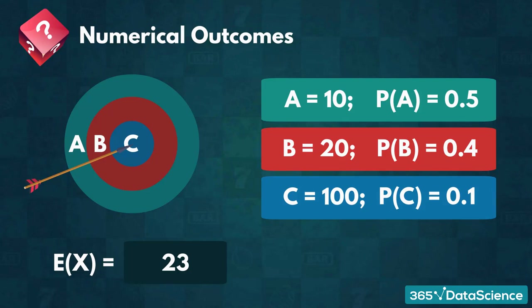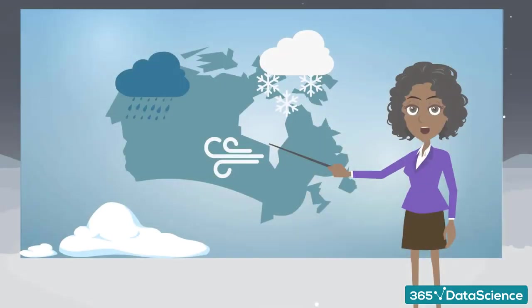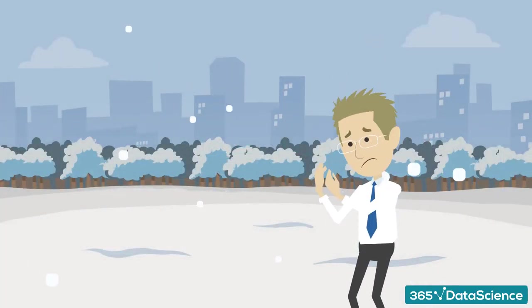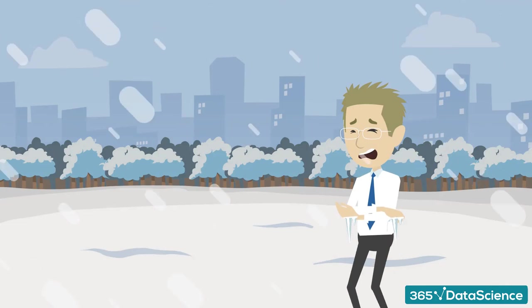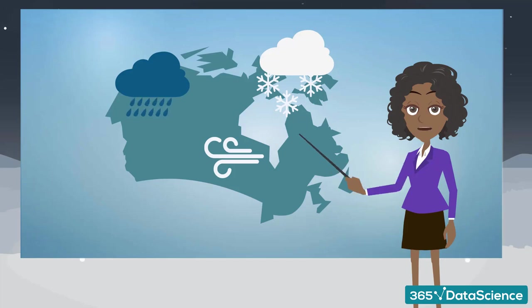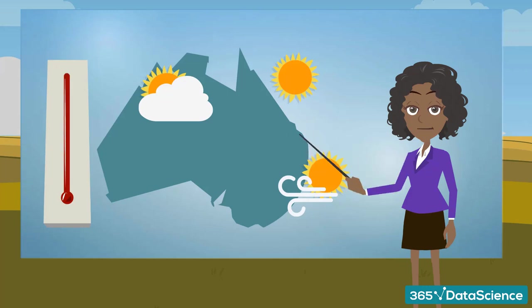We can never get 23 points with a single shot! So why is it important to know the expected value of an event? We can use expected values to make predictions about the future based on past data. We frequently make predictions using intervals instead of specific values, due to the uncertainty the future brings. Meteorologists often use these when forecasting the weather. That is why we often hear statements like 'Expect between 3 and 5 feet of snow tomorrow morning,' or 'temperatures rising up to 90 degrees on Wednesday.'